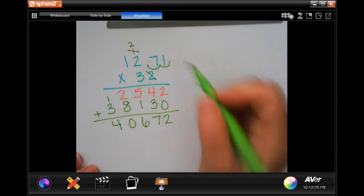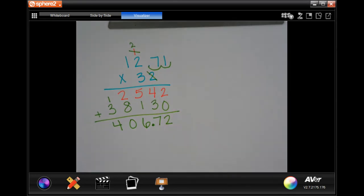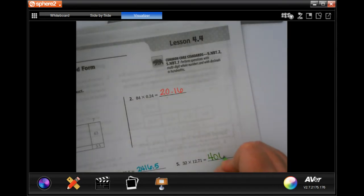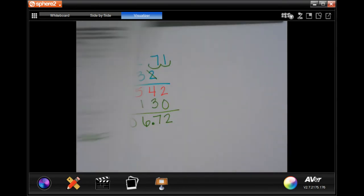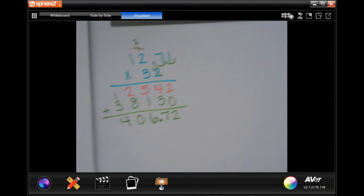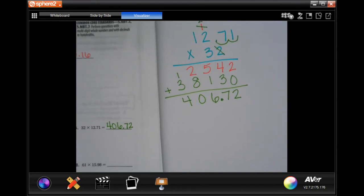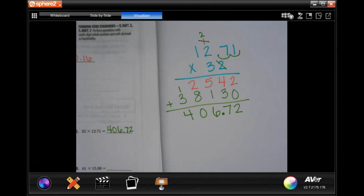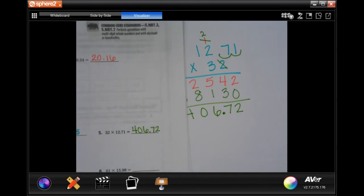So now I just need to go back, see where my decimal is, how many places in I have to go and do the same thing in the answer. So 1, 2 places, 1, 2, 406.72. You guys pause, take the time to write that down, make sure you show your work. It's important. And that was number 5.